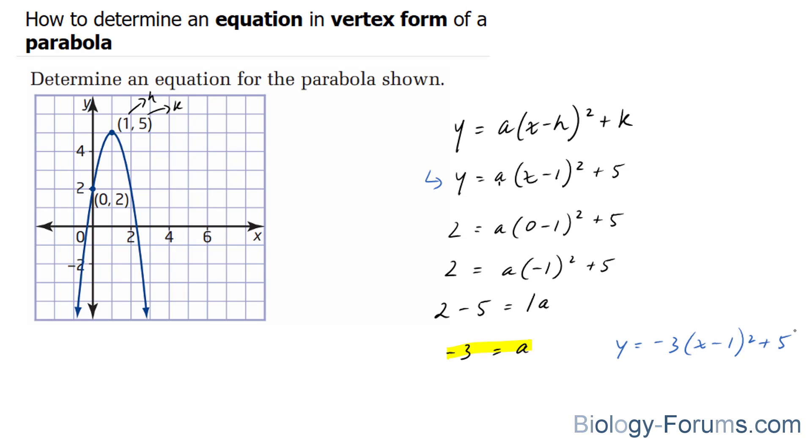So there you have it. That is how you determine an equation in vertex form of a parabola. You need two points, one of which has to be the vertex, and you also need to know the skeleton of vertex form.